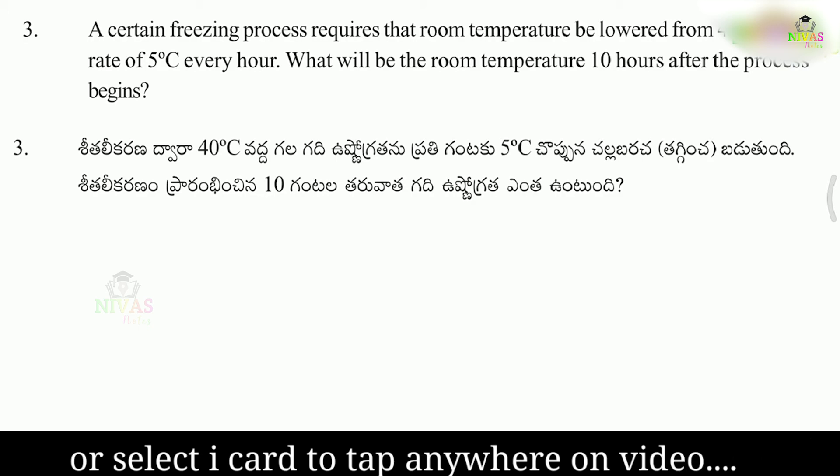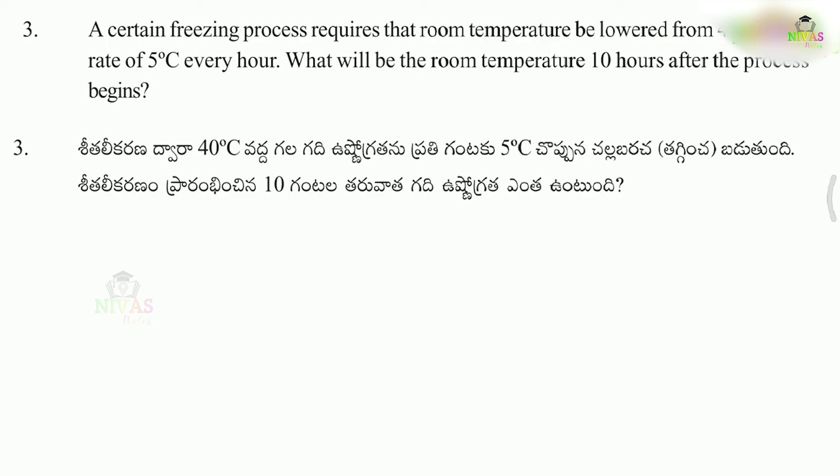This question says: there is a room with a present temperature of 40 degrees Celsius. The temperature is being lowered. If there is 5 degrees Celsius decrease in one hour, the heat will be lowered from 1 hour. If it is lowered for 10 hours, what will the room temperature be?